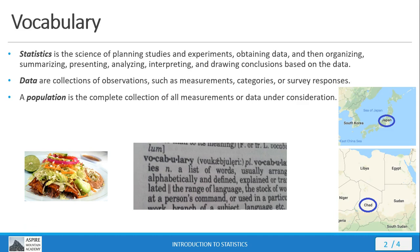Often in statistics, we want to know characteristics of the population. There are two ways of doing this. One way is to conduct a census. In a census, we collect measurements or data from every member of a population. This approach allows us to know what the characteristics of the population are with 100% confidence. However, for all but extremely small populations, obtaining data from every member of a population is extremely difficult, not to mention prohibitive in terms of both time and money.